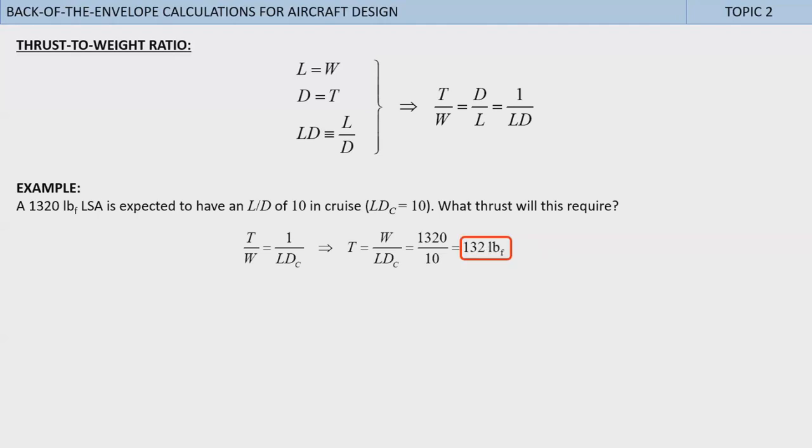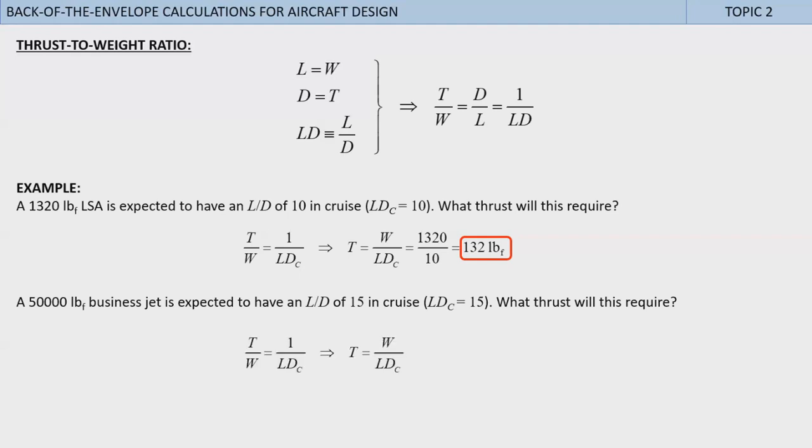To quickly determine, let's solve the above expression for thrust T. Substitute 1,320 pounds and LDc of 10 to get 132 pounds. This means that whatever the power plant, it better deliver 132 pounds of thrust at this flight condition. This can be applied to any kind of aircraft. For instance, let's apply it to a Gulfstream IV class aircraft. A 50,000 pound business jet is expected to have an L/D of 15 in cruise. LDc is equal to 15. What thrust will this require?